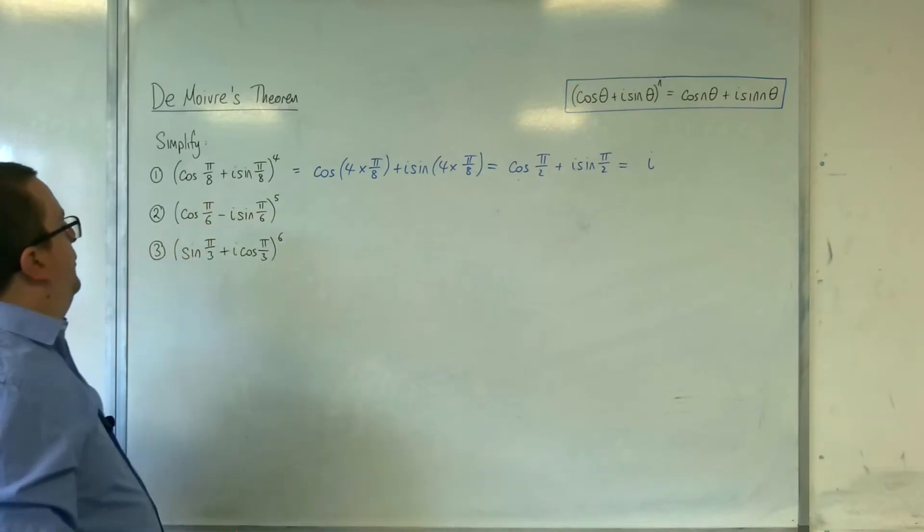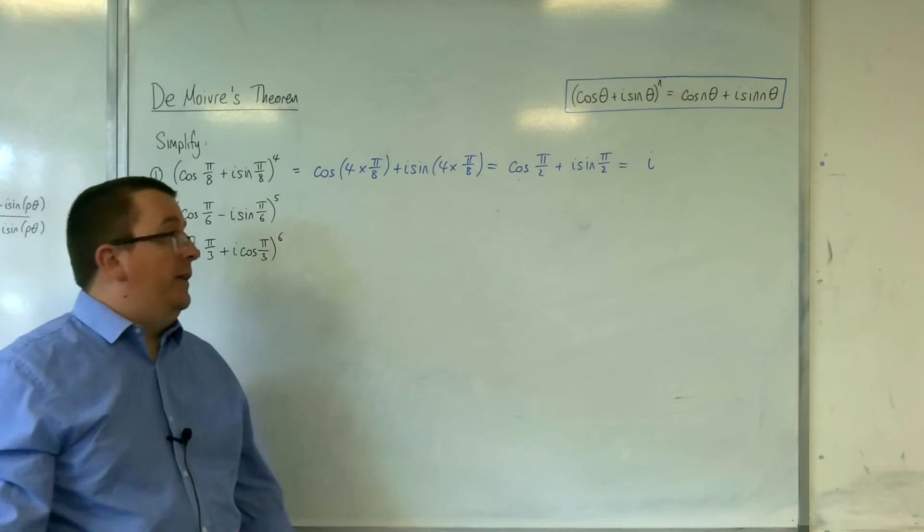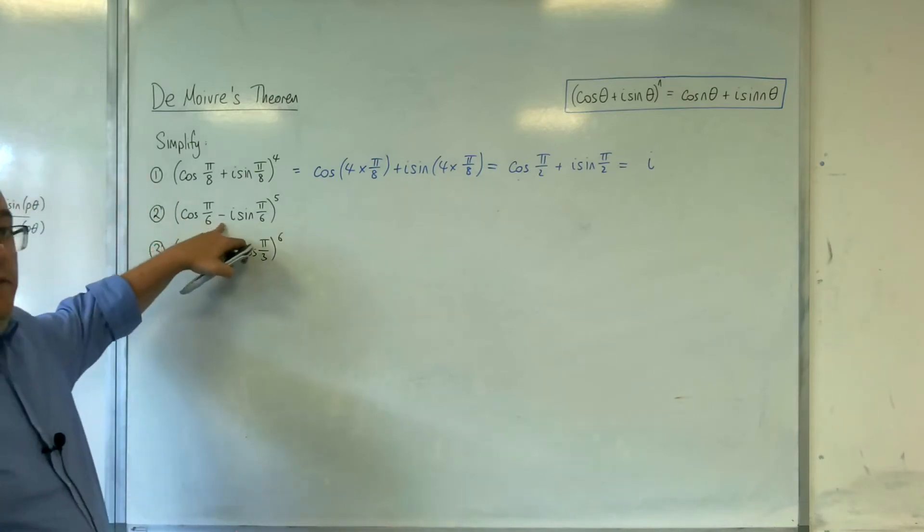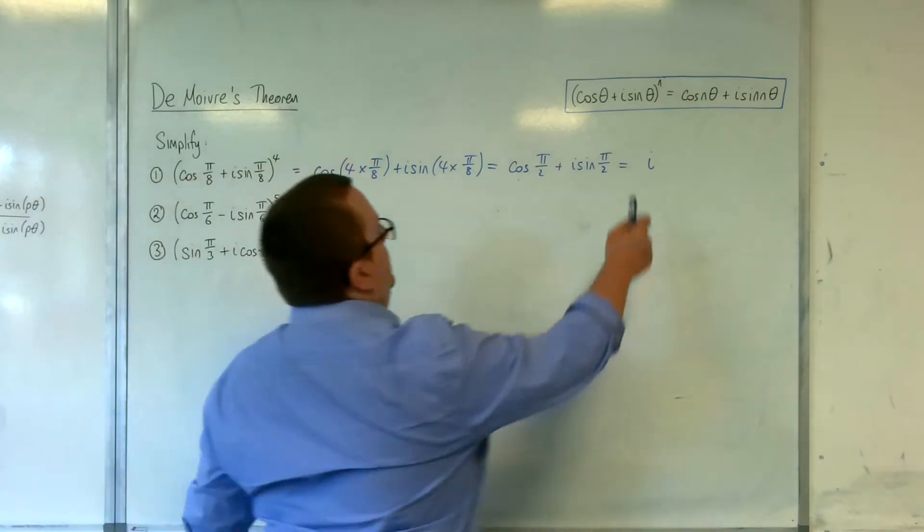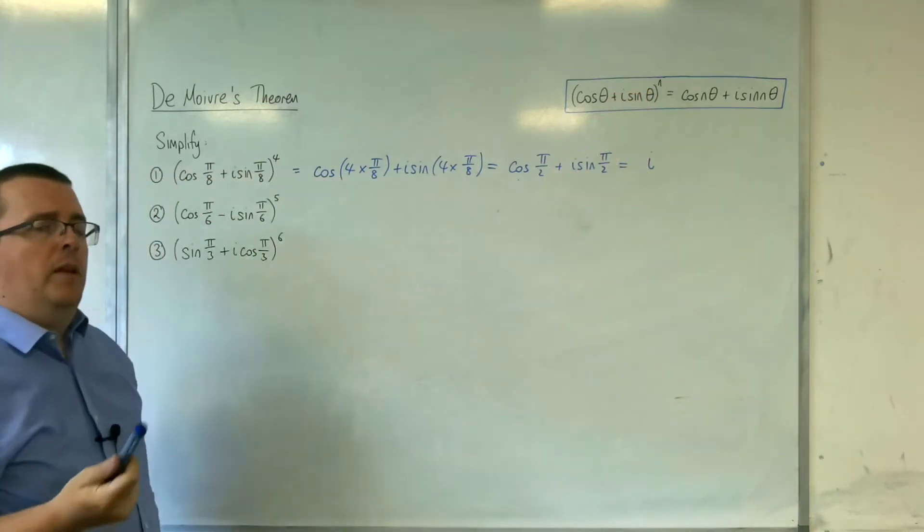Right, number 2: cosine of π over 6 take away i sine π over 6. Now where the problem is, is with that minus sign there. The formula only works with that as being plus, so we need to adapt it.